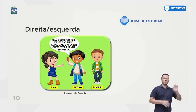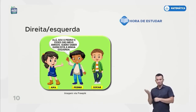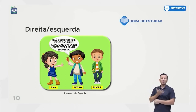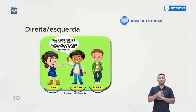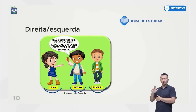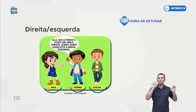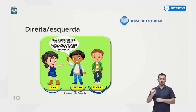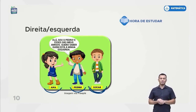Então esses são os termos: frente, atrás. Também temos direita e esquerda. Esse coleguinha está falando: 'Olá, sou o Pedro, e esses são meus amigos. Quero saber quem está à minha esquerda.' Tem a Ana, o Pedro e o Lucas. O Pedro quer saber quem é que está à esquerda dele. Vocês sabem quem é? É o Lucas — ele está ao lado esquerdo do Pedro.